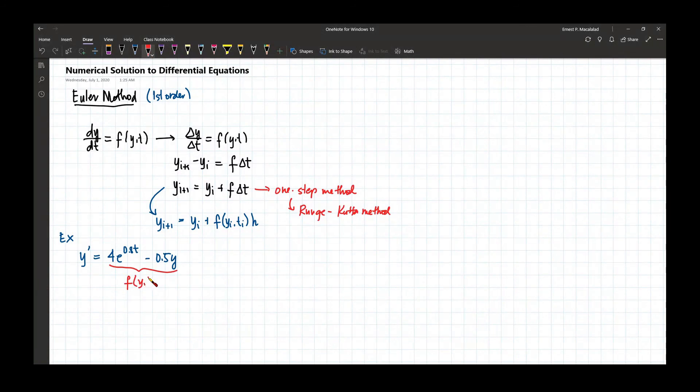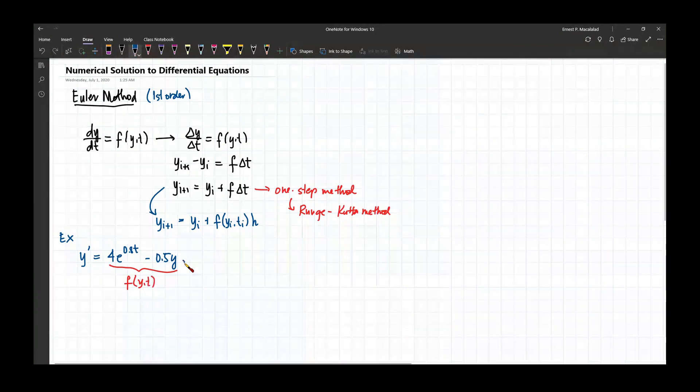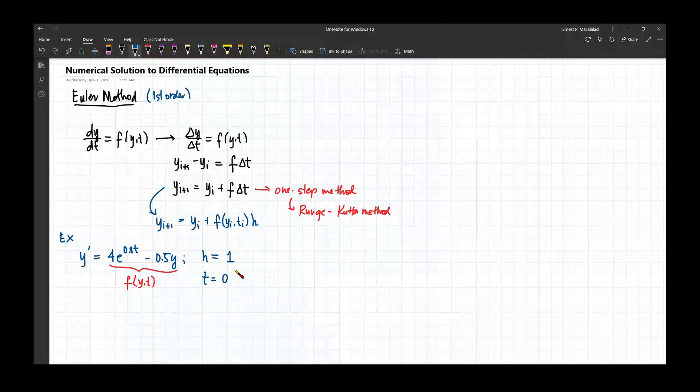Now, how about your h? So let's say our h or step size would be equal to 1, and then the interval of t will be from 0 to 4.